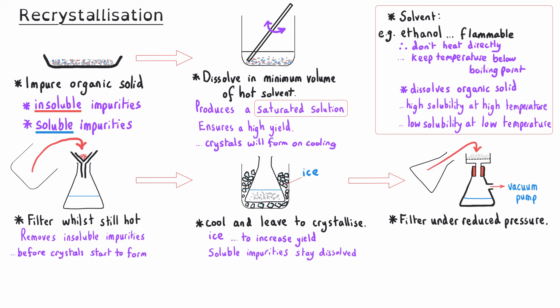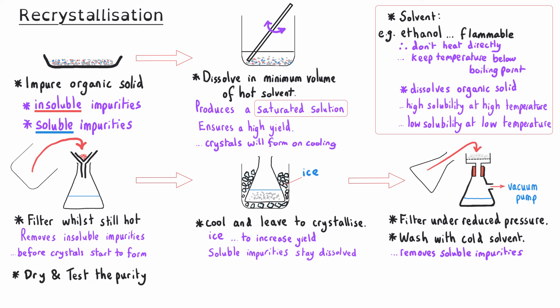Once we've got our purified organic solid, it's still mixed in with the filtrate, so we need to remove it from the liquid by suction filtration or vacuum filtration. While it's in the Buchner funnel, we wash it with cold solvent, because this removes those last traces of soluble impurities that could be stuck to the solid crystals. Finally, having dried our purified aspirin, we test its purity by measuring its melting point.